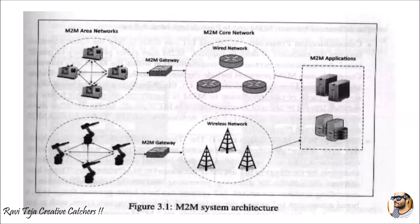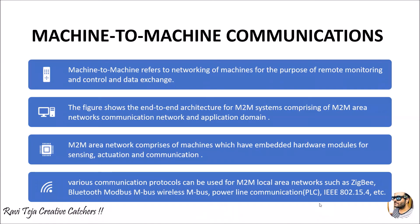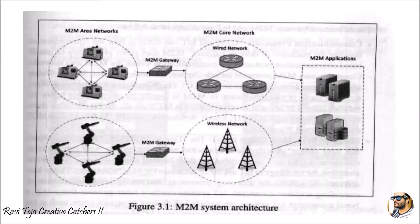In the machine to machine system architecture, the left side shows the M2M area networks which are local area networks. There are several machines, sensors, or actuators — IoT devices — all inter-communicated. This inter-communication between these machines is done using local area network protocols: Zigbee, Bluetooth, Modbus, M-Bus, Wireless M-Bus, PLC, IEEE 802.15.4 — all these protocols operate within this particular M2M area network.